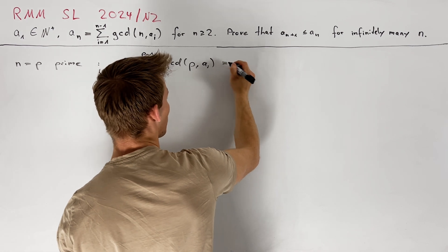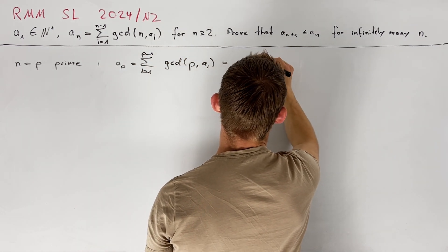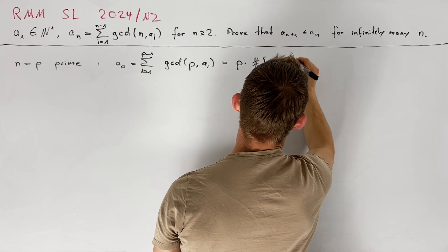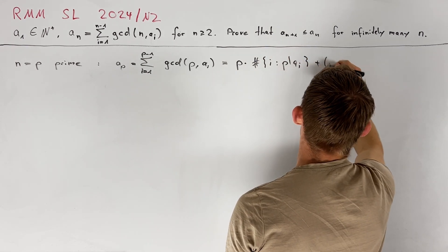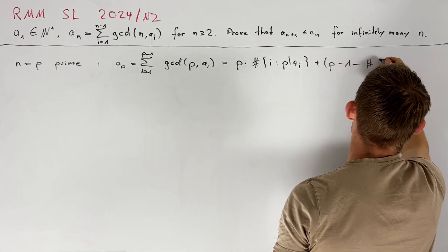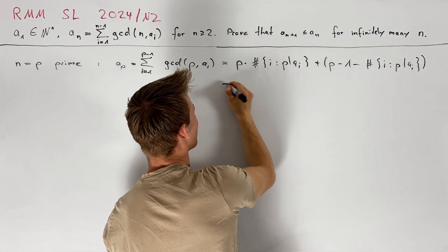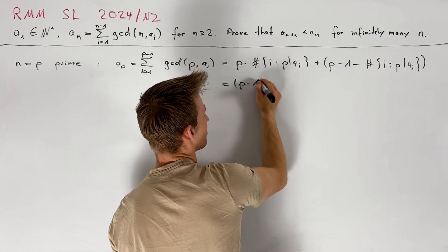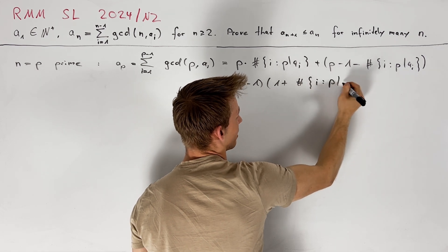So this is equal to p times the number of times that p divides a_i and now plus p minus 1 minus this number of times that p divides a_i. We can rewrite this as (p minus 1) times (1 plus the number of times that p divides a_i).